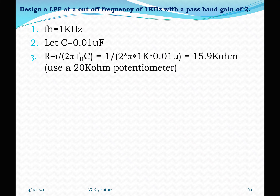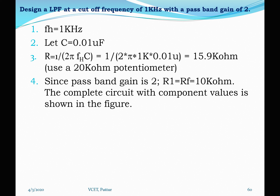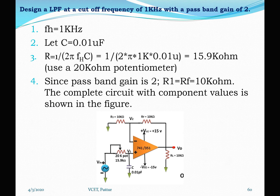There is no standard value for 15.9 kΩ. We have 15 kΩ, 20 kΩ, or 22 kΩ resistors available, so we use a 20 kΩ potentiometer and adjust it to 15.9 kΩ. Next, we find resistor values for the gain. The passband gain is 2, and for a non-inverting op-amp, AF = 1 + RF/R1. We can set R1 = RF = 10 kΩ. The complete circuit with component values is drawn accordingly.